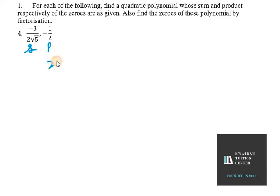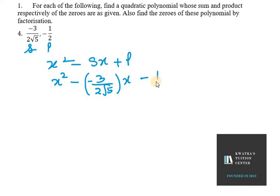We know that the polynomial can be written in the form x² - sx + p. So x² minus s, where s is sum, so -3/(2√5), times x plus product, and the product is -1/2.